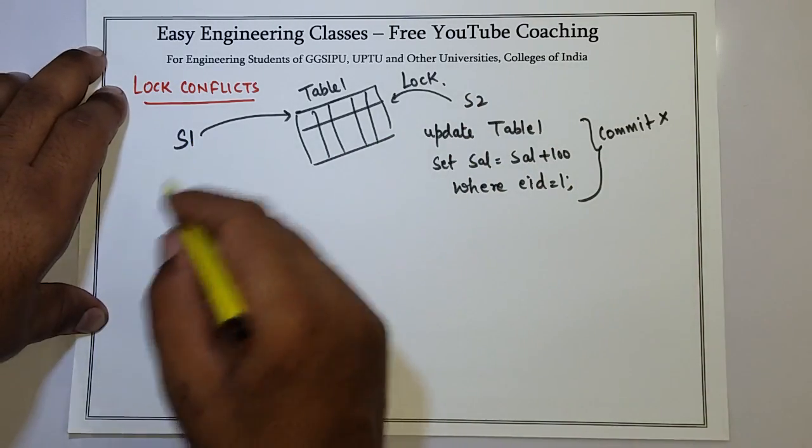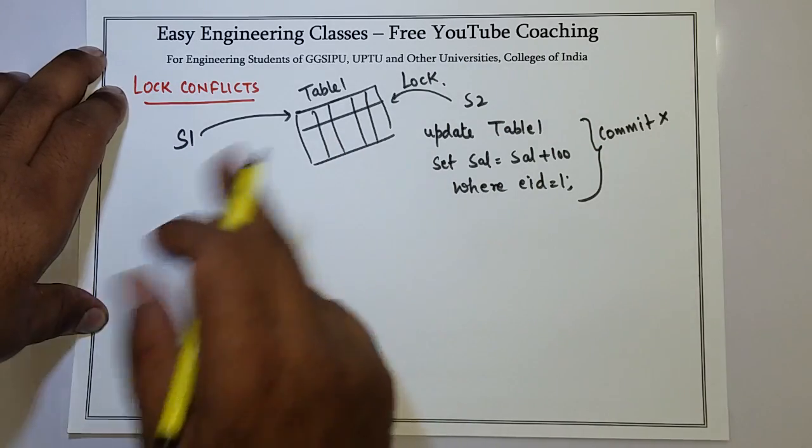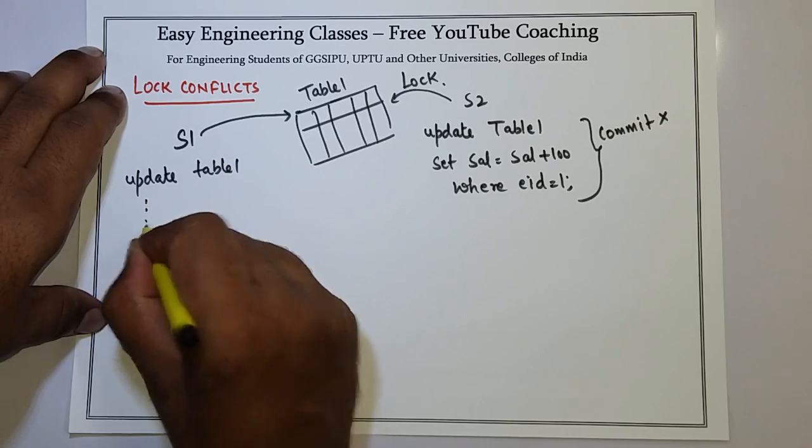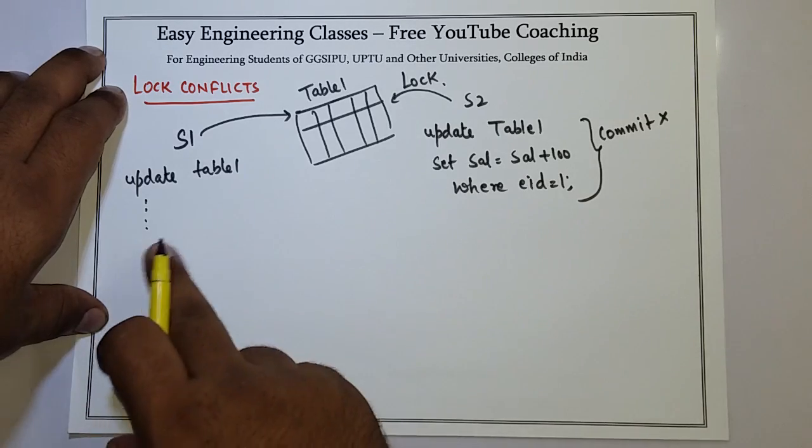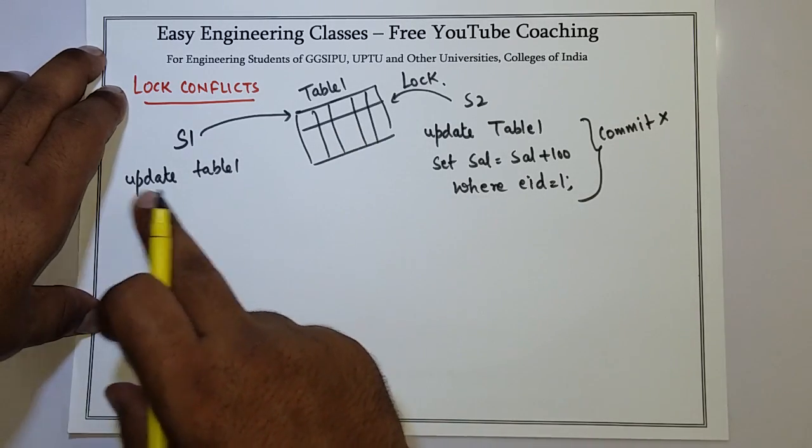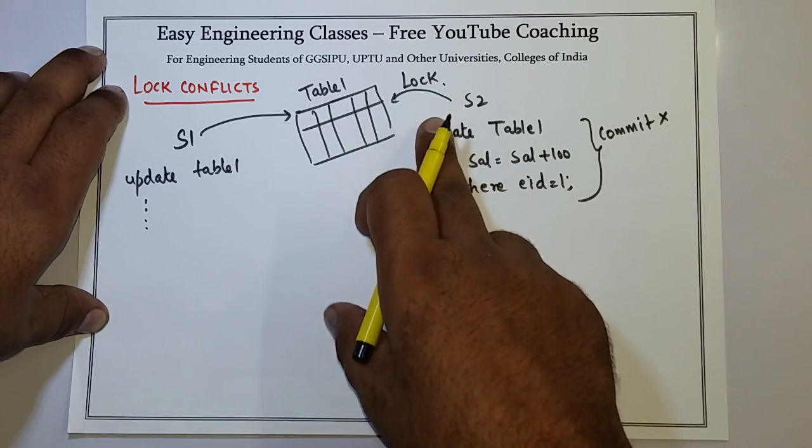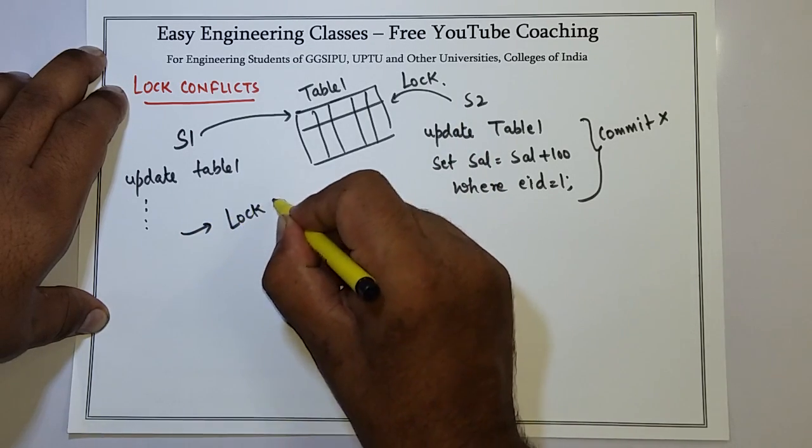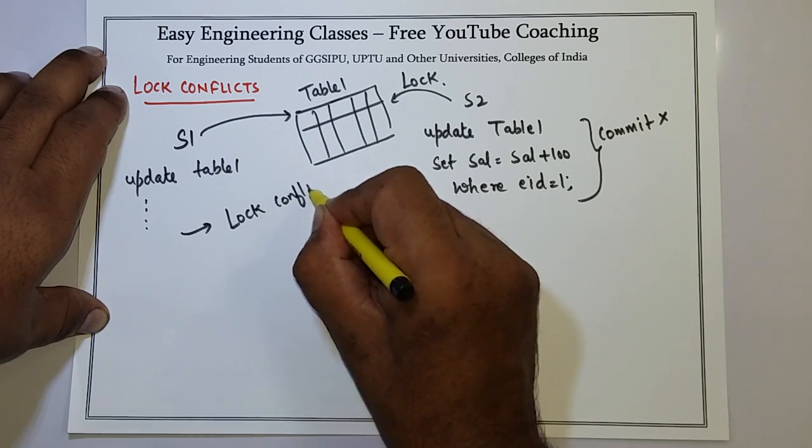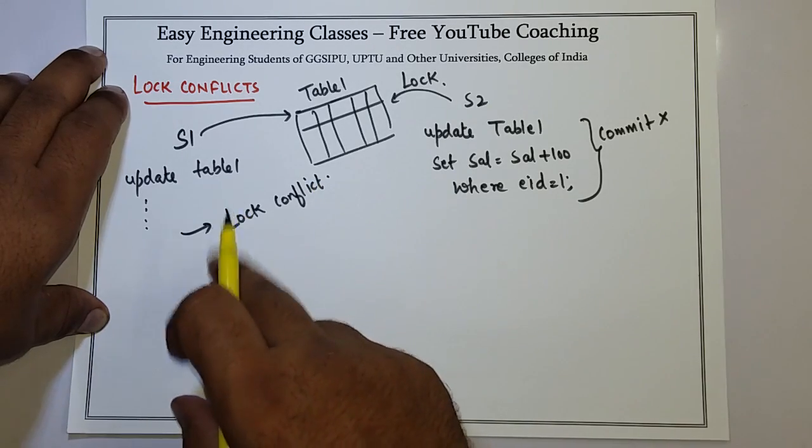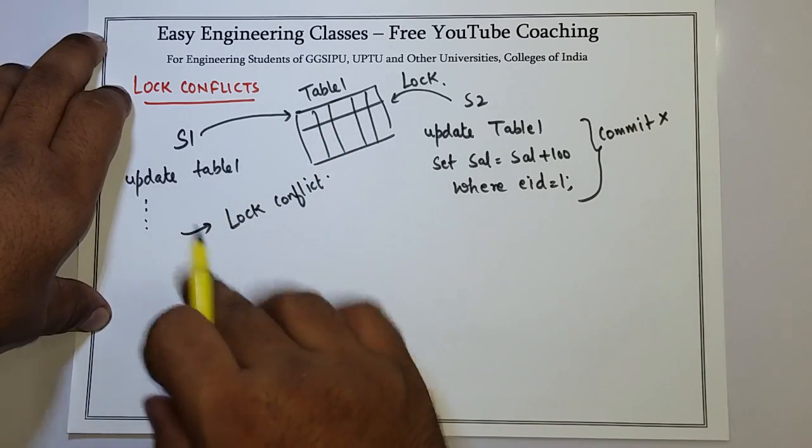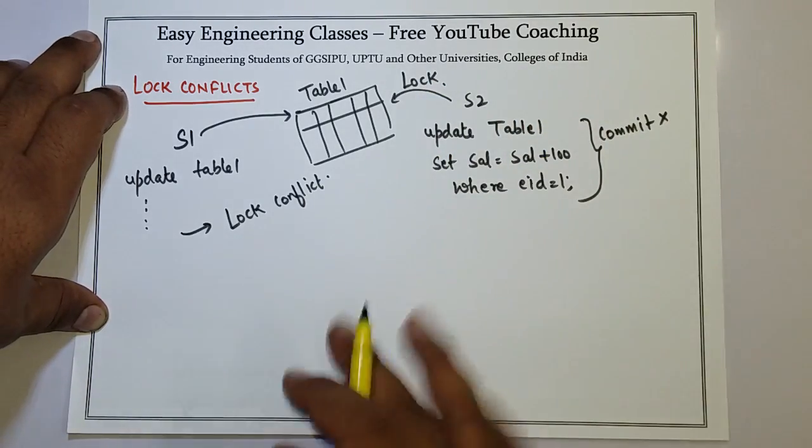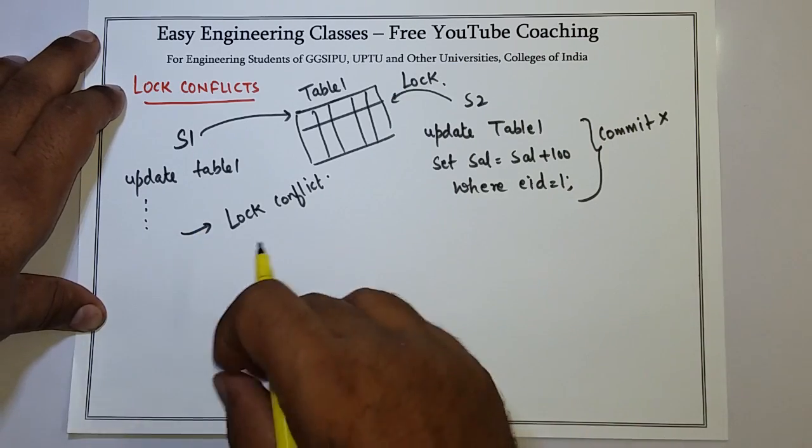And if S1 also tries to fire a same query on this table, suppose update table 1 and same or different execution, but it is trying to update the same table which is currently being locked by S2. So it will receive at this point lock conflict error. And the error can be: the transaction or the resource that you are trying to access is currently locked or held by another session or user. So this is how lock conflict occurs.